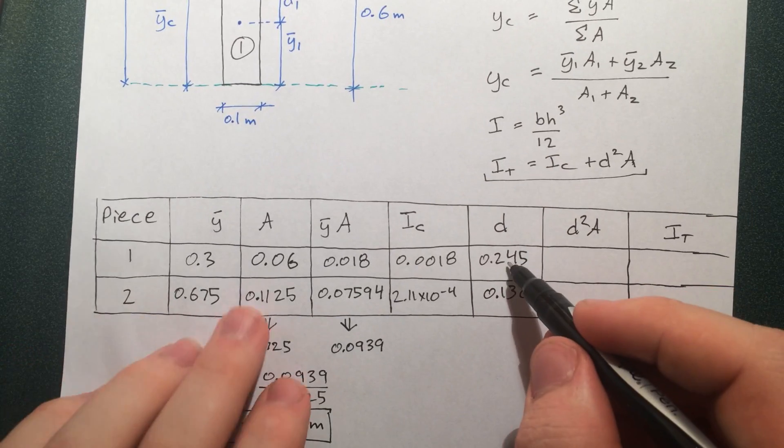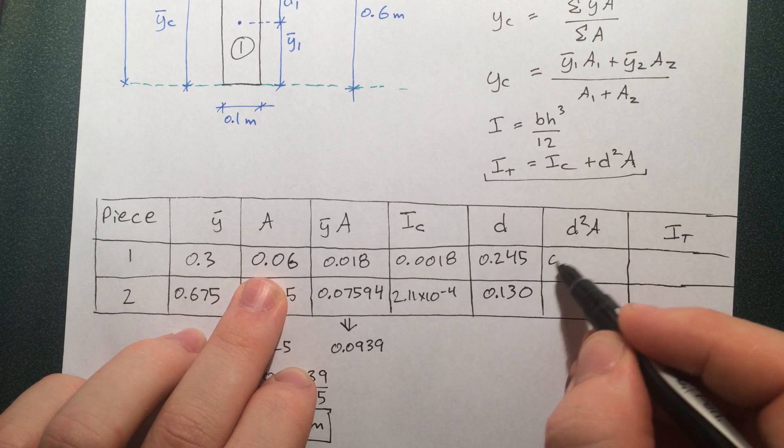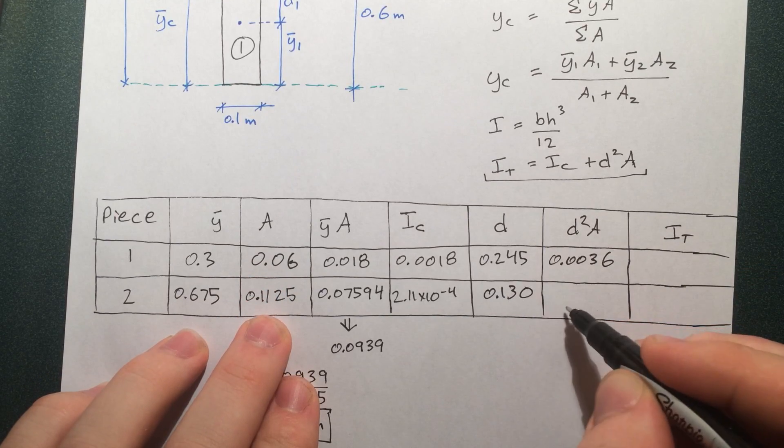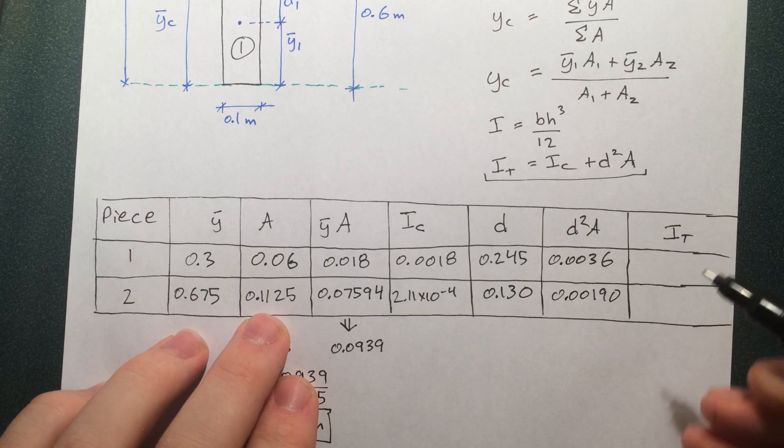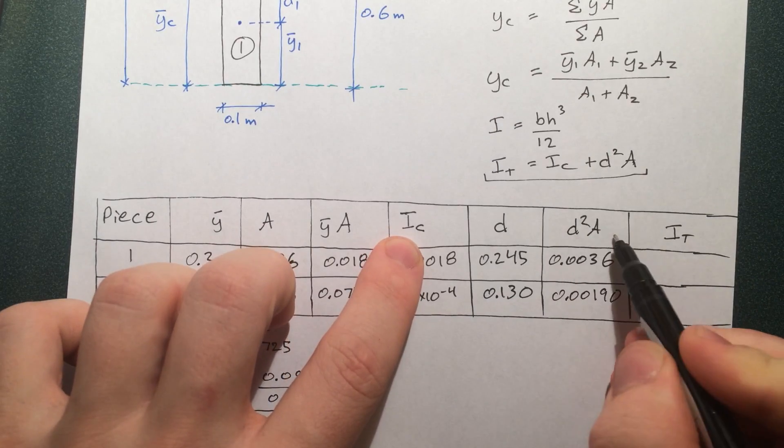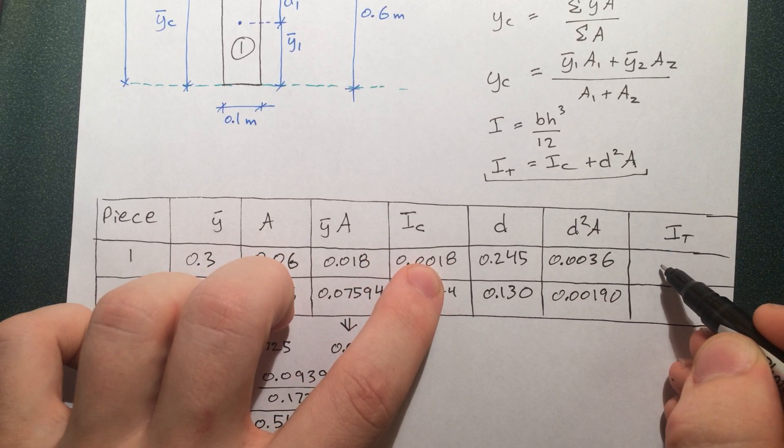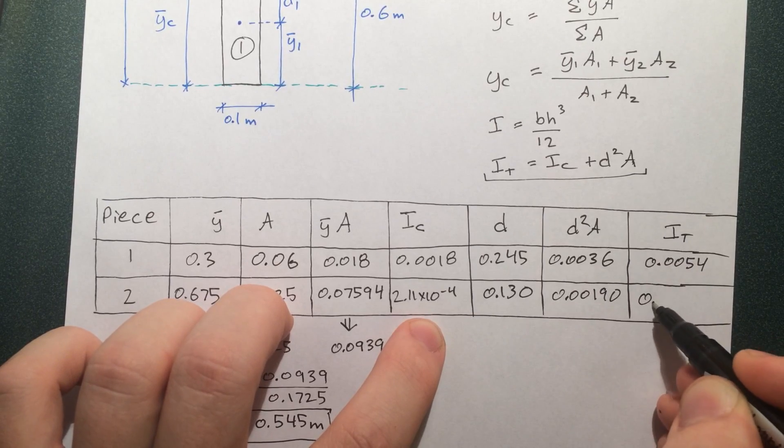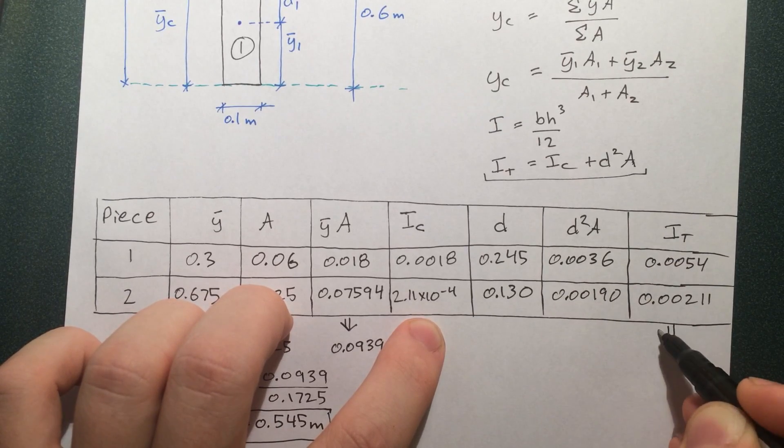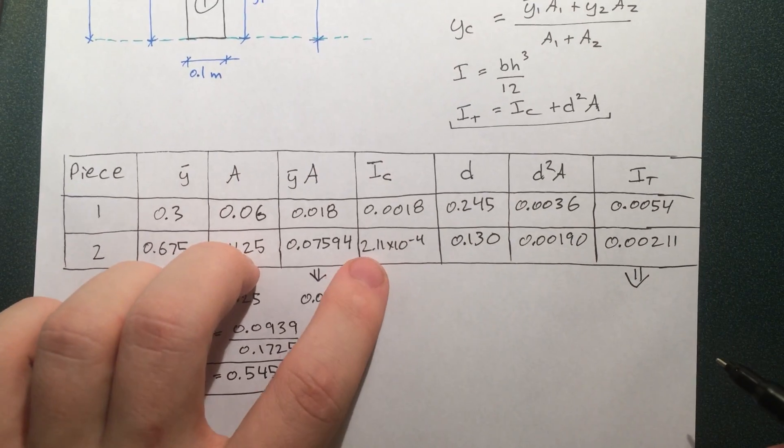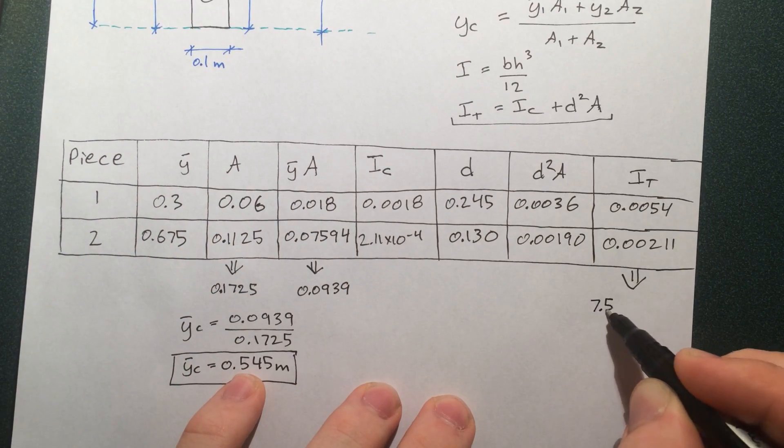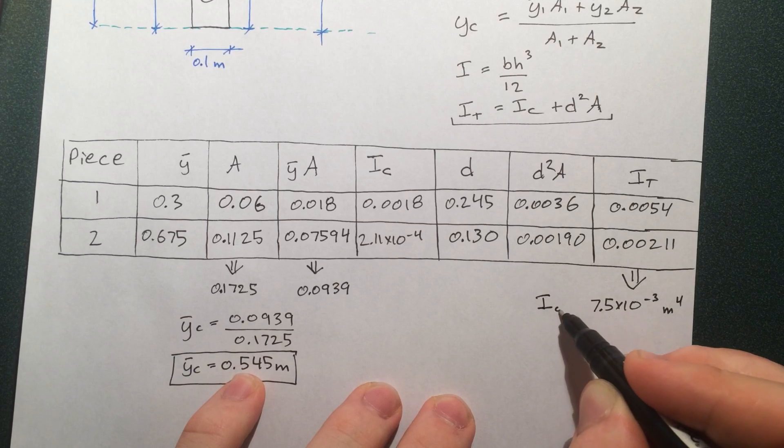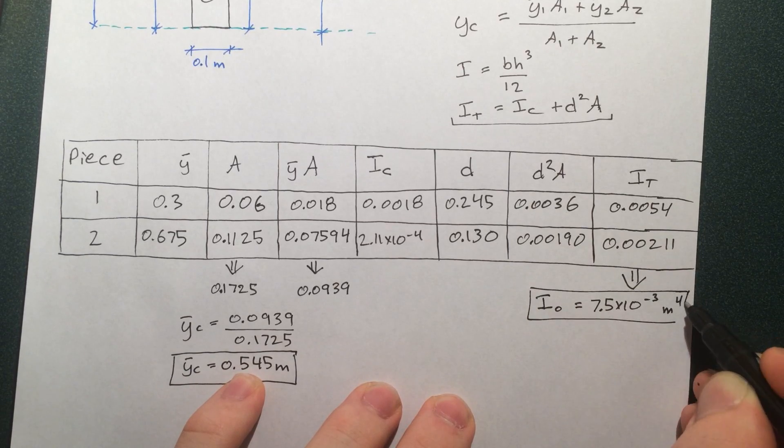d squared times A, that's just this times that. I_total then is just I_c plus d²A. So this plus this.